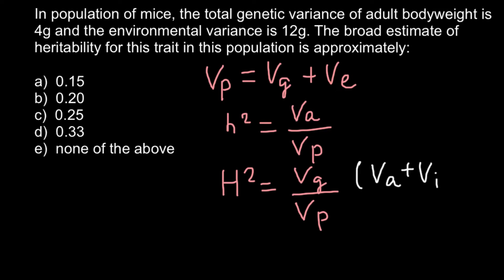Plus variance due to dominance. So three variances make one variance genetic.